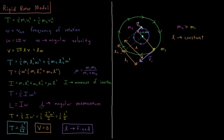Angular momentum is going to be very useful to us in this chapter because it's a lot more convenient to work with than linear velocity or linear momentum. We can factor the kinetic energy in terms of angular momentum: kinetic energy equals one-half I·omega², which equals one-half I²·omega² divided by I, giving us one-half angular momentum squared over moment of inertia. This is analogous to linear kinetic energy, which is one-half momentum squared divided by mass.